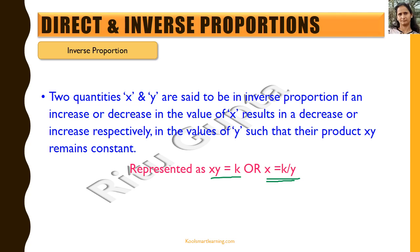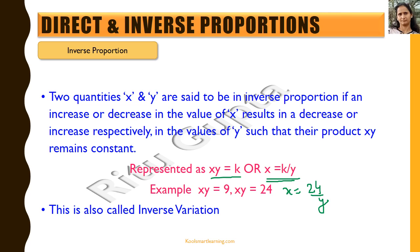From x equals k by y, we can see that if k is a constant, if we decrease the value of y, x will increase, and if the value of y is increased, x will decrease. Examples could be xy equals 9, or xy equals 24, which we can also write as x equals 24 by y. This is another representation of inverse proportionality, and it is also called inverse variation.